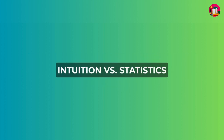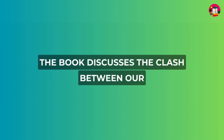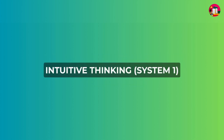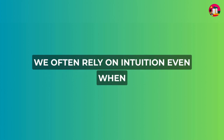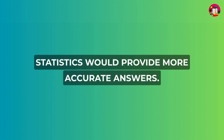Intuition versus statistics. The book discusses the clash between our intuitive thinking — System One — and statistical reasoning. We often rely on intuition even when statistics would provide more accurate answers.